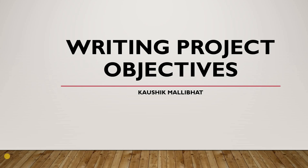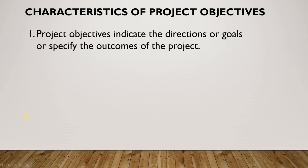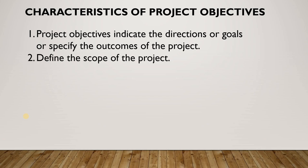This project objective clearly defines what you are aiming at. Let's look at some characteristics of project objectives. Project objectives should be able to indicate the directions, goals, or specify the outcomes of the project. By looking at your project objective, the reviewer or the client should be able to decide where you are heading. It should define the scope of the project, what you will accomplish, and define the constraints. Everything should be clearly mentioned.